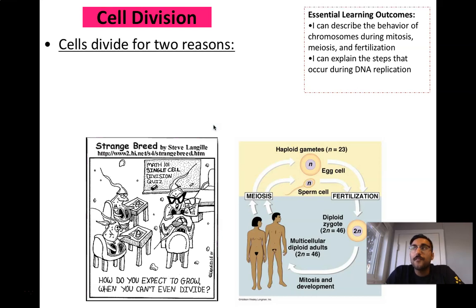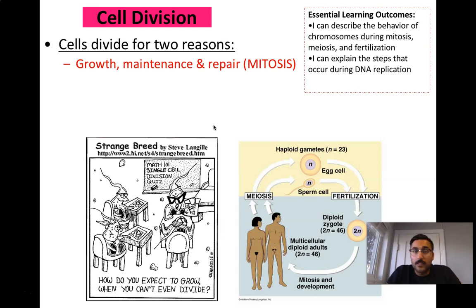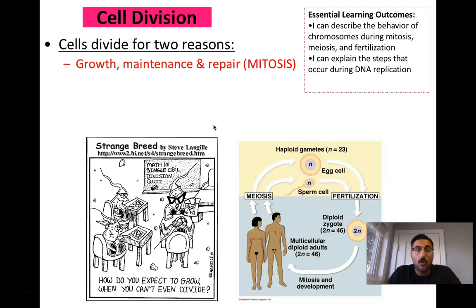Cells have to divide for two reasons. First of all, growth, maintenance and repair. This is the process of something called mitosis. This is when your hair grows, or you have a cut and your skin heals over, or your new red blood cells get formed. Toenails grow, different organ cells shed and regrow.